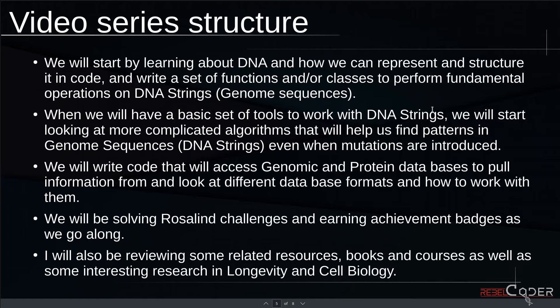On top of those tools, we are going to start writing more complicated code where we will be accessing genomic and protein databases and looking for really cool patterns in that data. We will also be solving Rosalind challenges and earning achievement badges — it's like a game where you solve a problem and get an achievement. This can also be used in your CV if you decide to move into data science or bioinformatics-related jobs, alongside your GitHub repository.